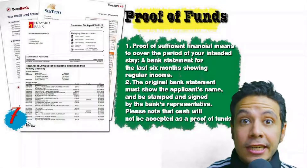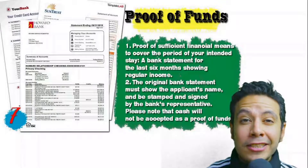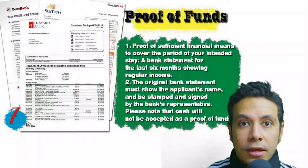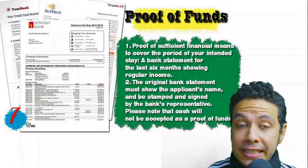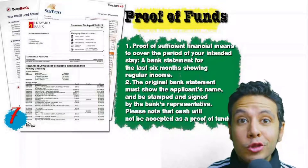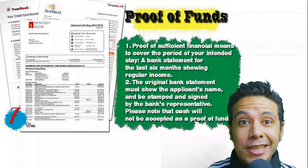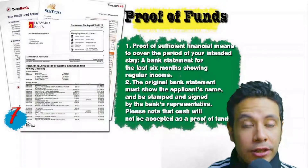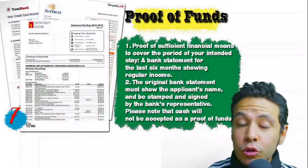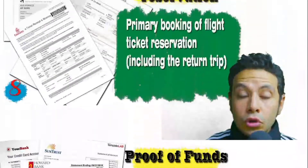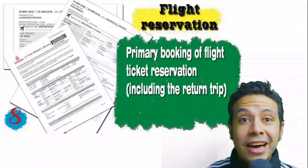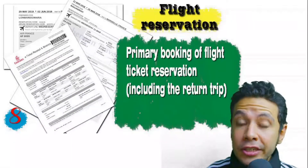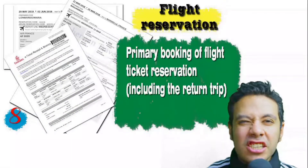Proof of sufficient funds is a bank statement showing your balance for at least six months. The original bank statement must show your name and be signed and stamped by the bank representative. Remember that cash will not be accepted as proof of funds. You should also provide a flight reservation — it can be an initial booking, but in some minor cases a confirmed booking is needed.